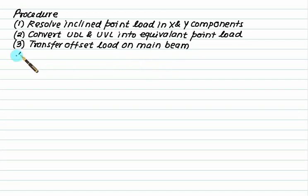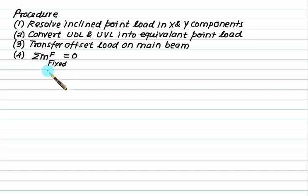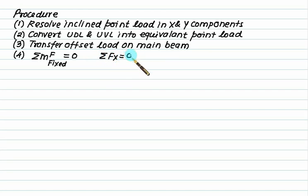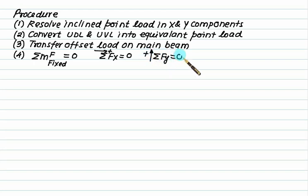Once you have finished this, your entire load will be on the beam. Step four: always take the moment about the fixed support, because the fixed support has two reactions — two reactions pass through the fixed support — so we can very easily find out the reaction at the roller support. Then we have one more equation, sigma Fy = 0. Using this equation you can find the answers. If the answer is positive, the assumption is correct.